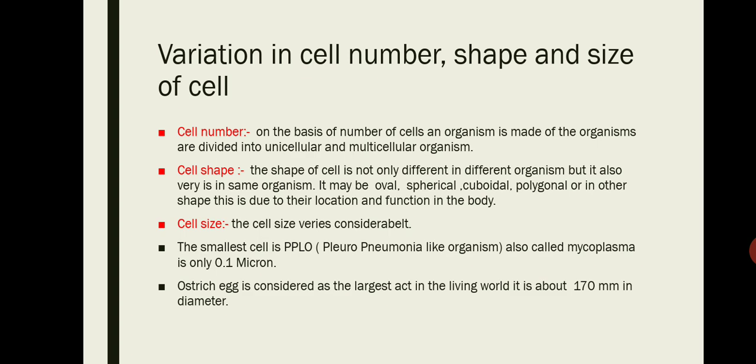Now, variation in cell number, shape, and size of cell. On the basis of number of cells an organism is made of, the organisms are divided into unicellular or multicellular organisms. If we look at this, organisms are either unicellular or multicellular. Some examples of unicellular organisms are amoeba and paramecium. And multicellular examples are plants and animals, even human beings. So these are the examples of unicellular and multicellular organisms.